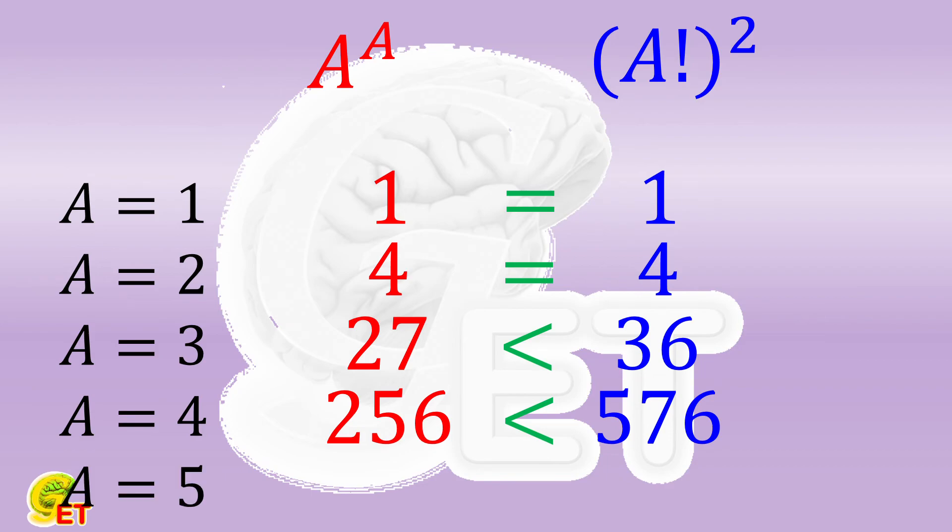When A is equal to 5, the left side is 3,125 and the right side becomes 14,400. Again.